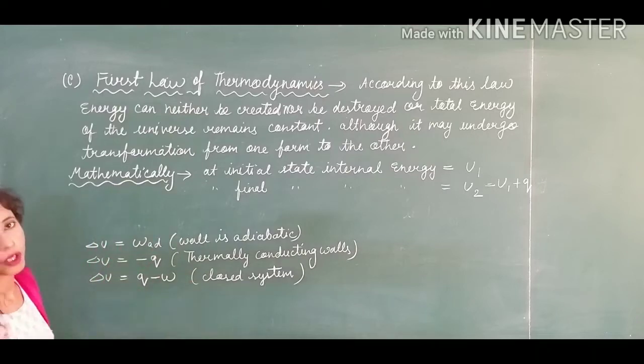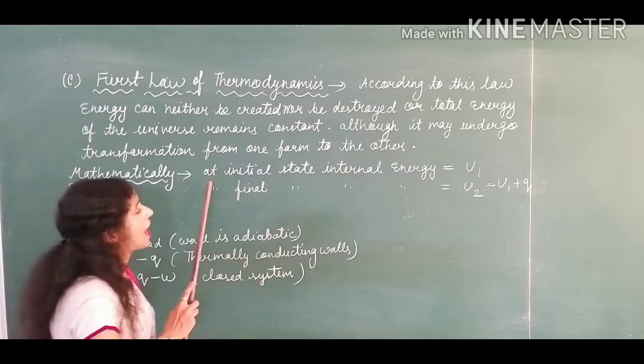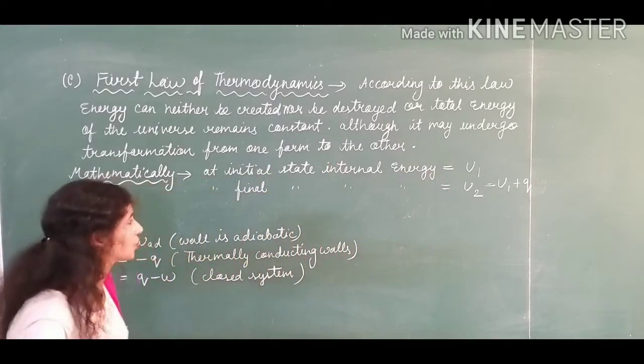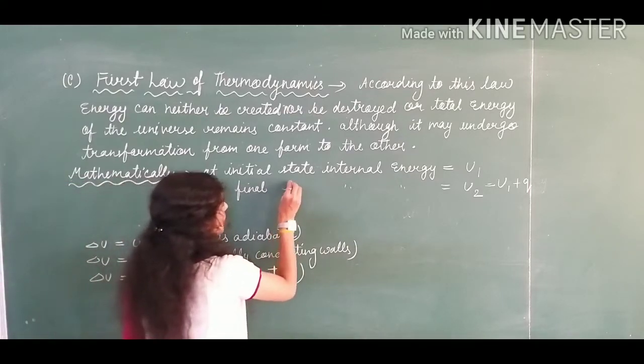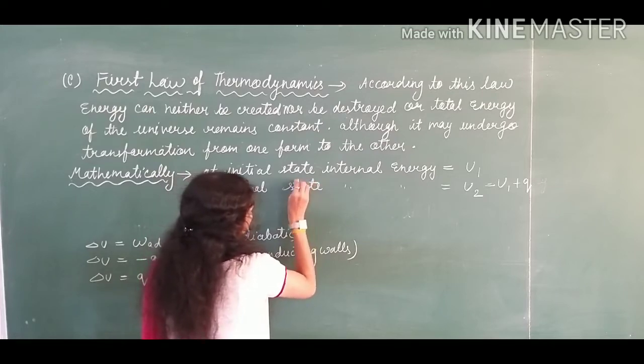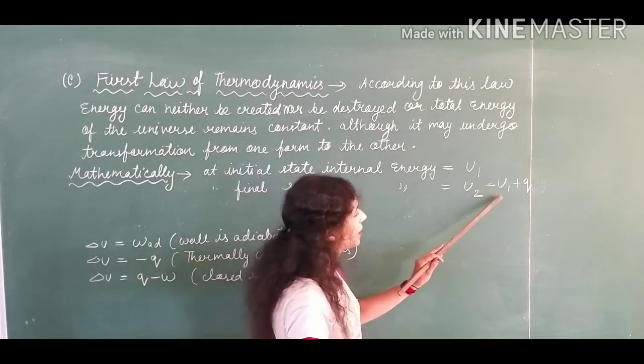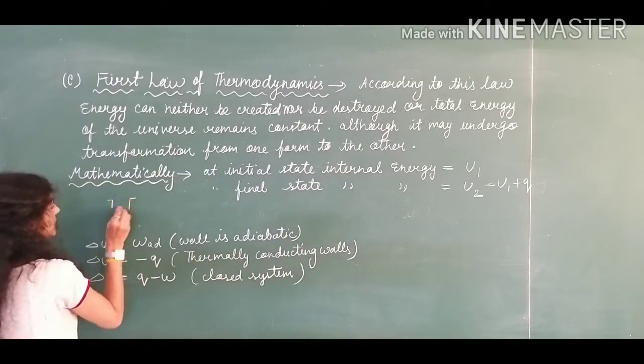Now mathematically how can you show that about the first form of thermodynamics. At the initial state the internal energy is to be denoted by U_initial, that you know that. For the final state the internal energy, that is to be denoted by U_final and I have written U plus Q. So you see here, suppose you are having one system, the internal energy, this is the first case, it will have some internal energy.